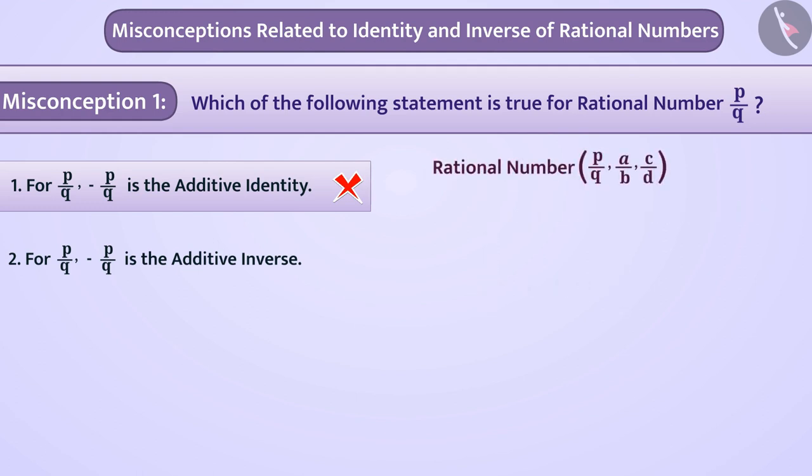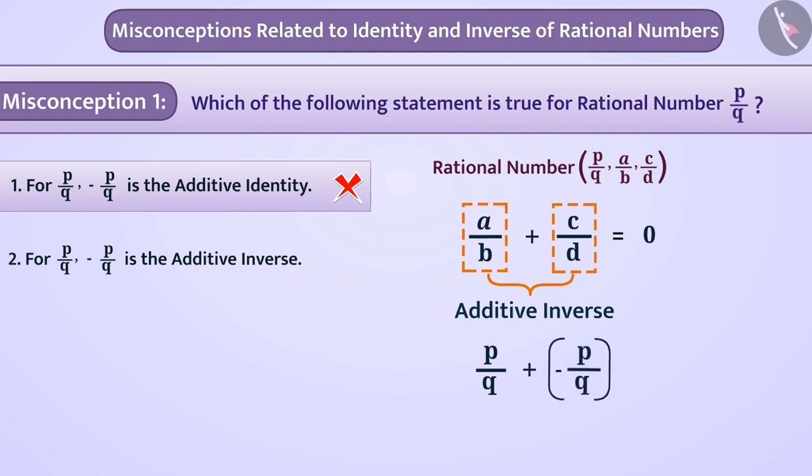Similarly, if addition of any rational number A by B with rational number C by D is 0, then A by B and C by D are called additive inverse of each other. Here, addition of P by Q with minus P by Q gives answer as 0.